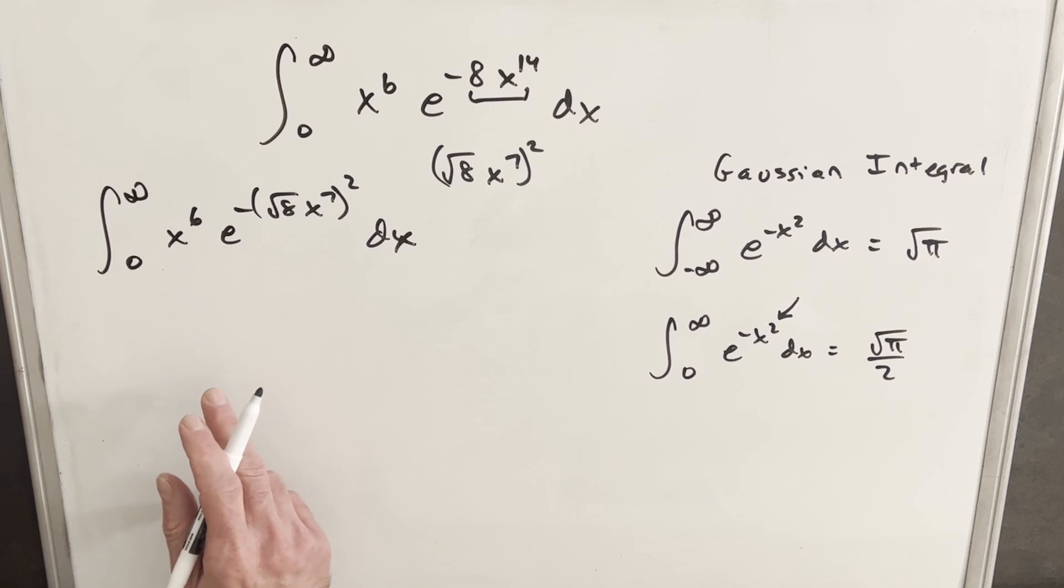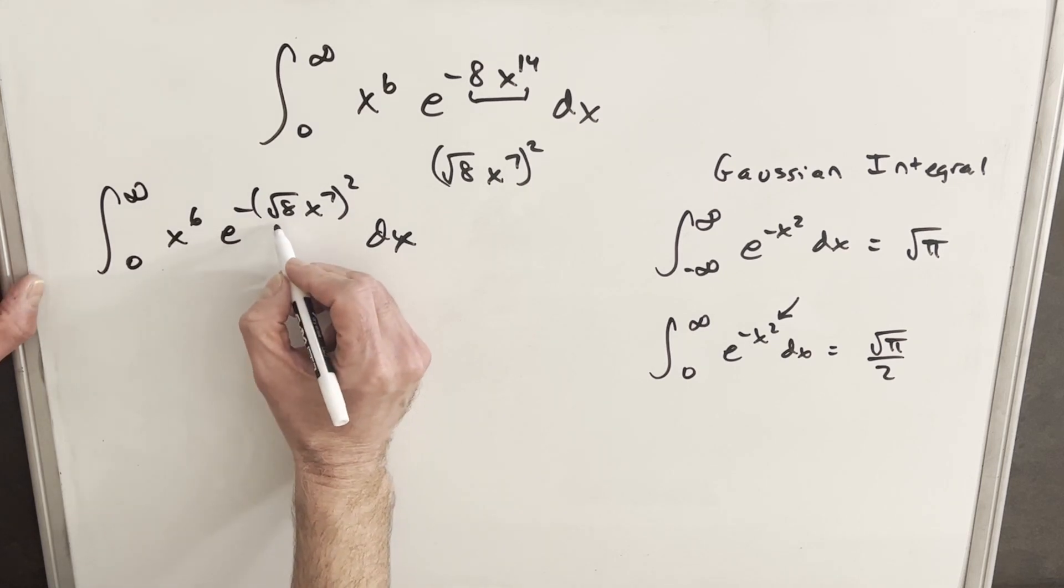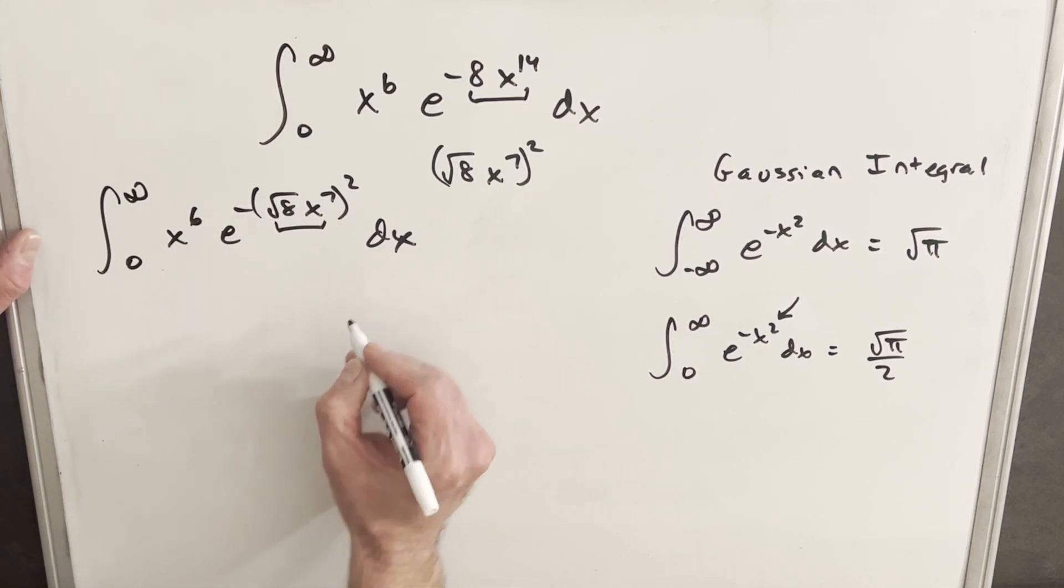Okay, now that I've rewritten my exponent, what I want to do next is I want to see, we need to get rid of this x to the 6th somehow and we also want to simplify this. So let's see if we can do a u substitution and just kind of clean this up.